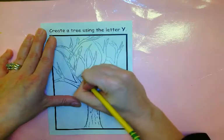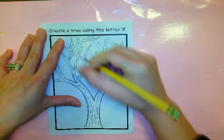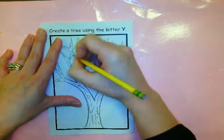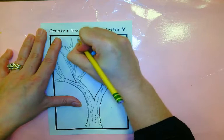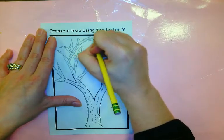Notice how I haven't had to erase because I was just drawing the letter Y and I'm not worried about mine being perfect because there's no perfect tree. Every tree is different. There's not one tree that looks the same.